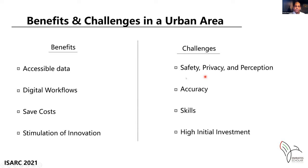The challenges are normally related to safety, privacy, and public perception. Safety concerns include what happens when a drone fails in a specific area — its height, weight, and damage costs. Privacy concerns relate to what kind of data can be collected through the drone's cameras and sensors. Additionally, there are challenges of public perception — how people feel about having drones around — as well as accuracy, skills, and high initial investment.